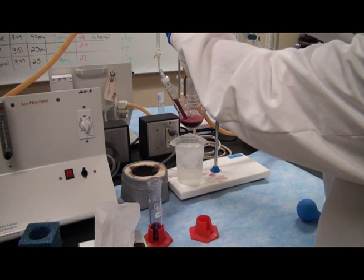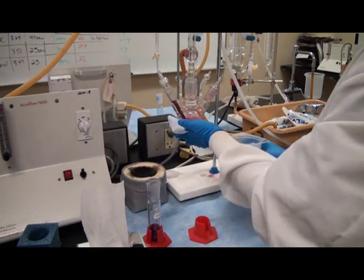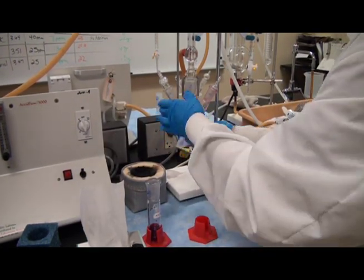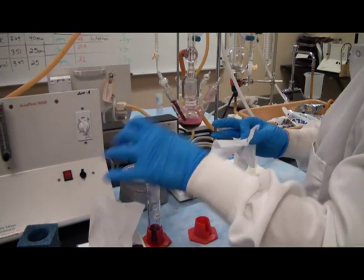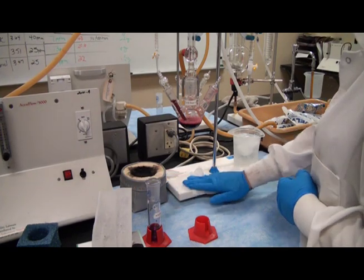In order to obtain a total SO2 value, a bound SO2 value is needed in addition to the free SO2 value just obtained. Using the same sample already in the round bottom flask, assemble the apparatus.